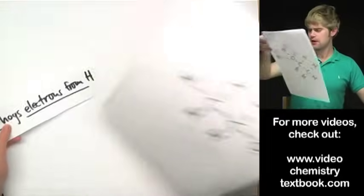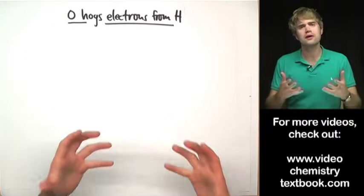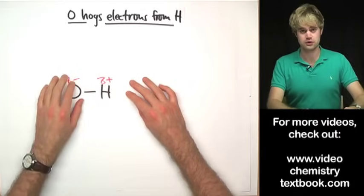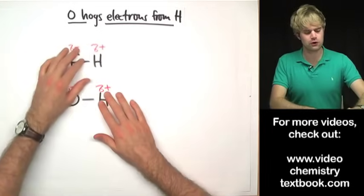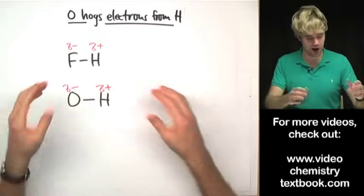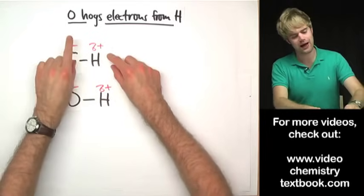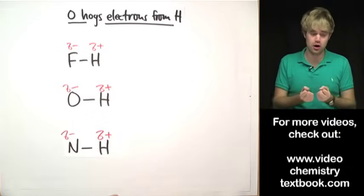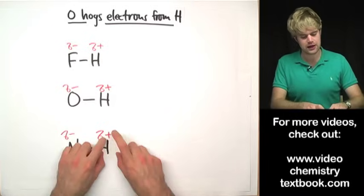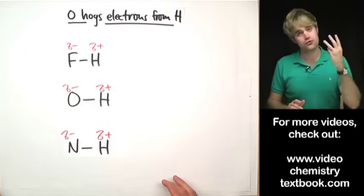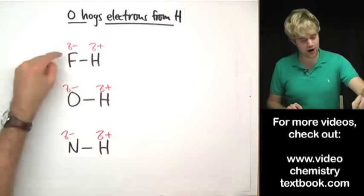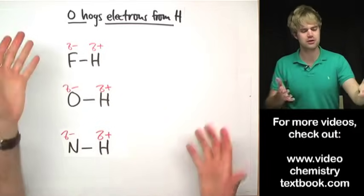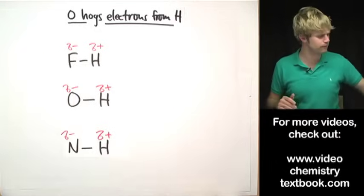O and H aren't the only atoms that can form hydrogen bonds. Fluorine also has a high electronegativity, so when bonded to H, fluorine hogs the electrons giving itself a slight negative charge and making hydrogen slightly positive. Nitrogen too is able to hog electrons away from hydrogen, giving it a negative charge and hydrogen a positive charge. So there are three atoms that can participate in hydrogen bonding besides hydrogen: F, O, and N. If a hydrogen is bonded to an F, an O, or an N, that hydrogen can form a hydrogen bond. You can remember this because it spells 'FON' — like 'phone.'